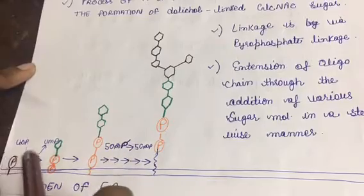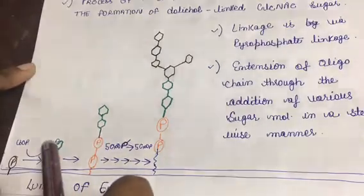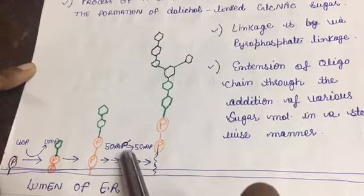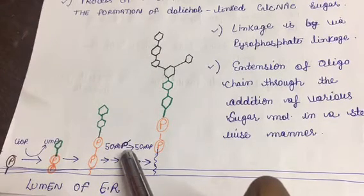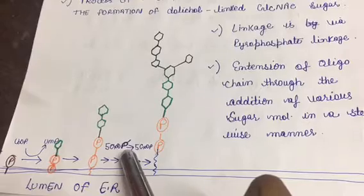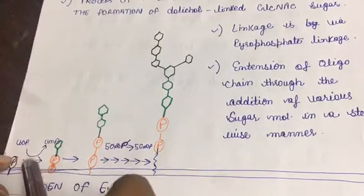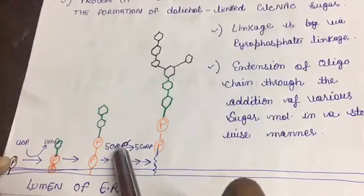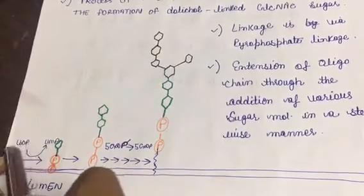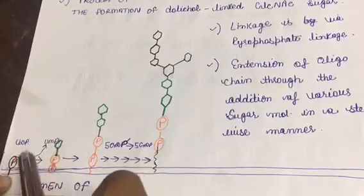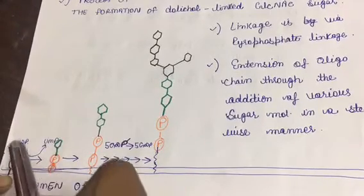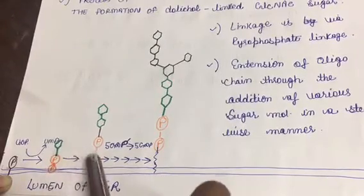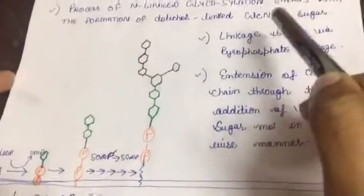Otherwise our sugar glucose, mannose residues, whatever we have to attach, in their natural form they are inactive. So to activate them we have to activate them with the help of UDP and GDP. So after they are getting attached to UDP they are active, and later on by utilizing this energy they are getting attached onto this dolichol phosphate.